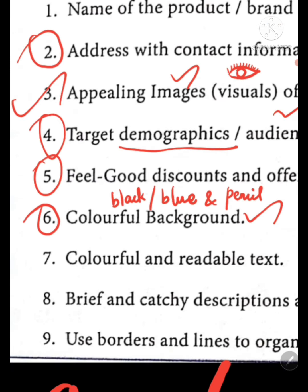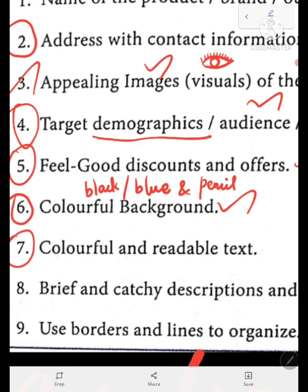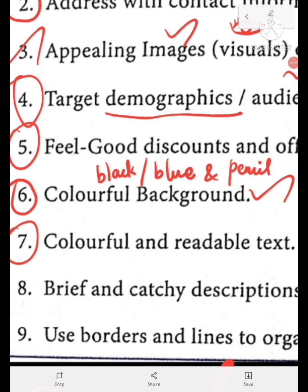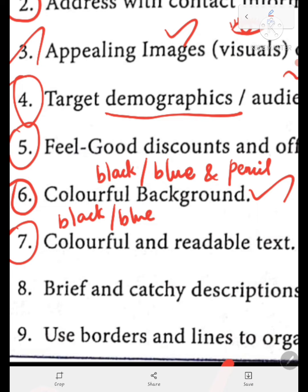Next is colorful and readable text. Colorful and readable text is applicable for the advertisement that exists in newspapers. Newspaper advertisement can be colorful. But in your exam paper, how do you make it colorful? You use black or blue, or both black and blue, to color your advertisement in your examination paper.